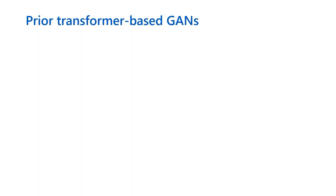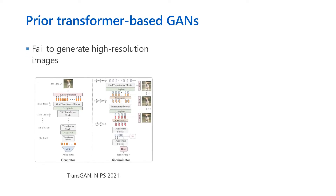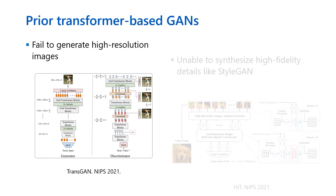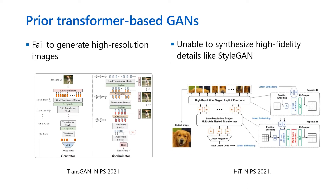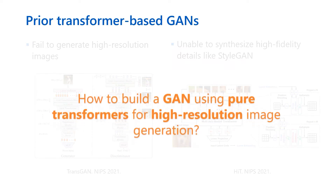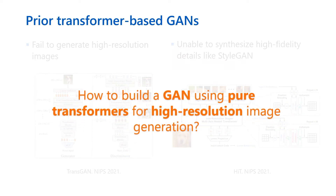A few works attempt to use pure transformers to build generative networks. However, some of them fail to generate high-resolution images, while others are unable to synthesize high-quality details like StyleGAN. Therefore, we try to answer the question: how to build a GAN using pure transformers for high-resolution image generation?